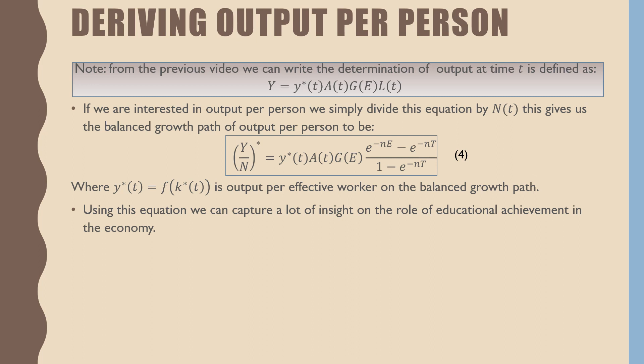Where this Y*_t is the output per effective worker on the balanced growth path. Using this equation, we can capture a lot of insight on the role of educational achievement in the economy.